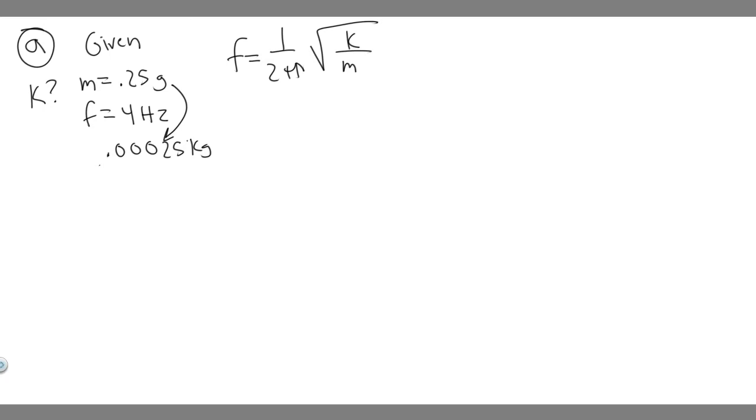Now we can actually plug it in. But what we want to do is solve for k, so we're going to manipulate this equation. I can multiply both sides by 2π. So we get 2πf equals the square root of k over m. Then we can square both sides. This is going to become 4π² times f², and that equals k over m. Let me just multiply both sides by m.